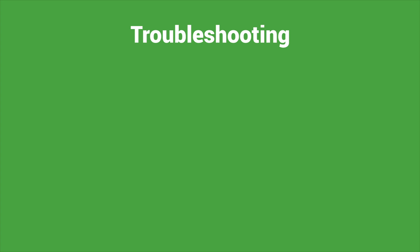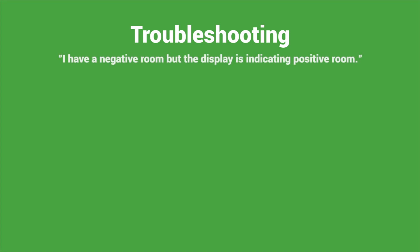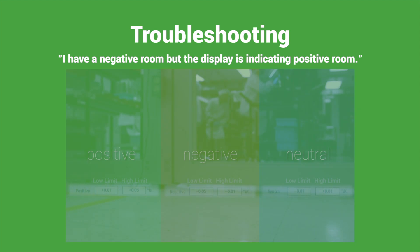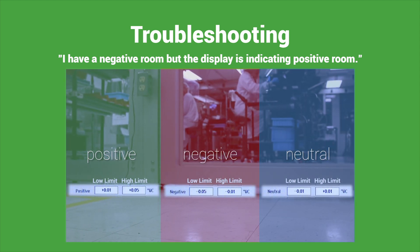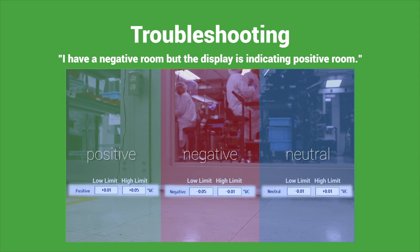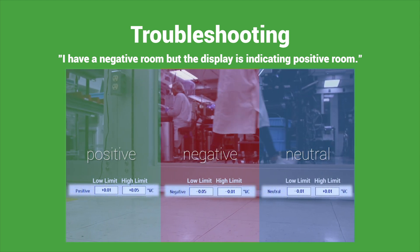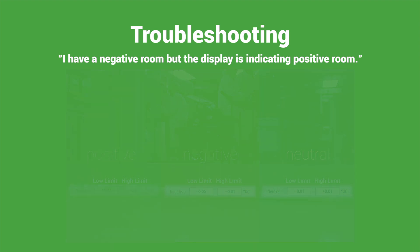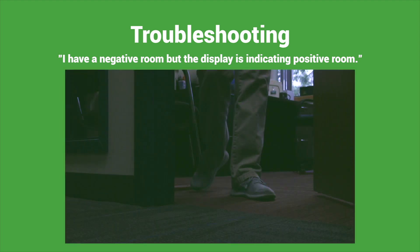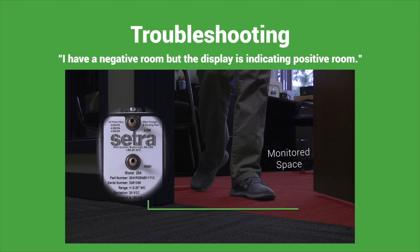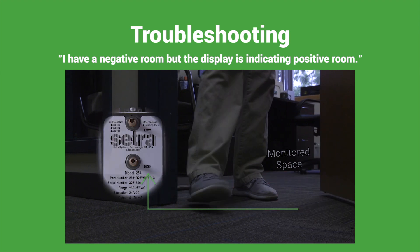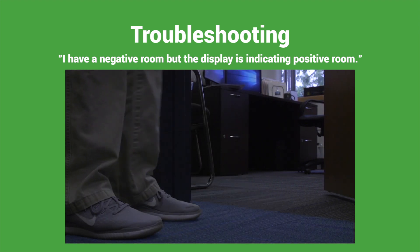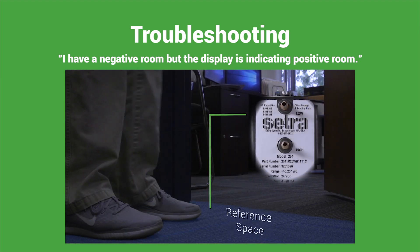Troubleshooting: I have a negative room but the display is indicating a positive room. Check the alarm set points and make sure they correspond to the proper kind of room. Be sure the unit is plumbed correctly so that the high or positive port is plumbed to the room being monitored and the low or negative port is plumbed to the reference space.